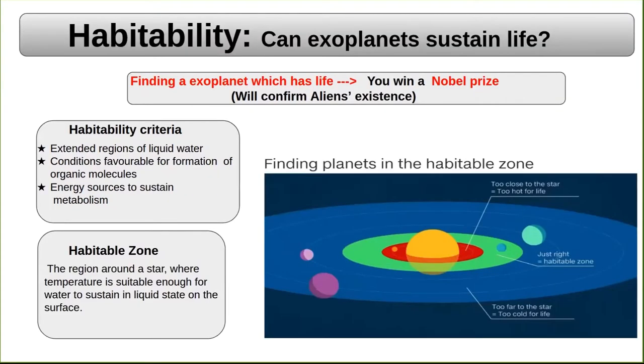Now the question is, even if exoplanets exist, can they sustain life? We know that water is necessary to sustain life. There need to be suitable temperature for the existence of water in liquid phase on the surface. Now consider the region which is very close to the star, which is shown here in red color. Here the temperature is too high, so water can't exist here in liquid phase.